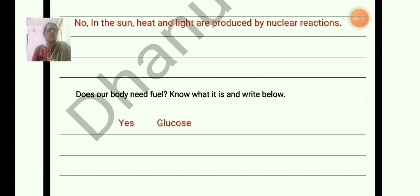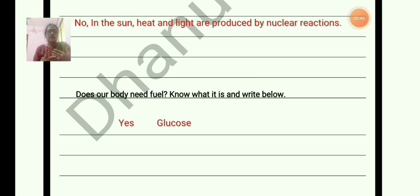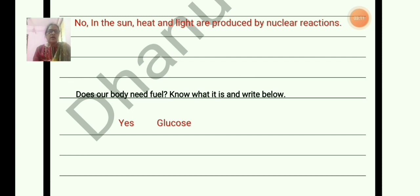Does our body need fuel? Obviously we need fuel. Fuel means energy — we need energy to do work and our everyday activities. Where do we get the energy? From food. Food contains nutrients like carbohydrates, proteins, and vitamins. Complex molecules like starch are broken down into the simplest molecules — glucose. We need glucose as a fuel for getting energy.